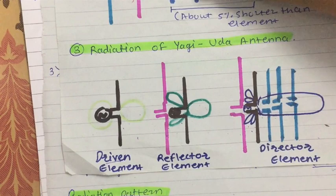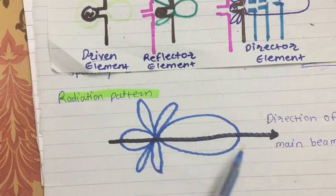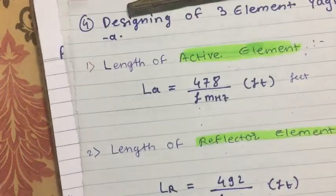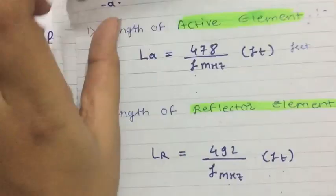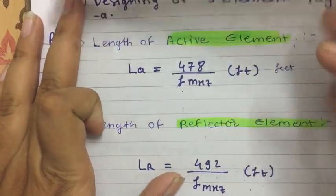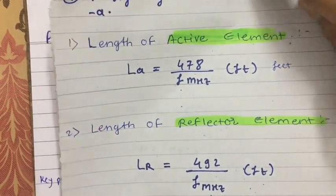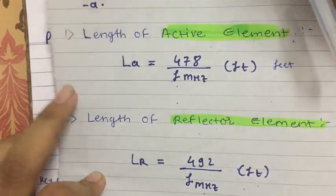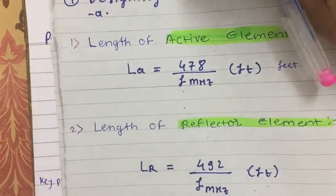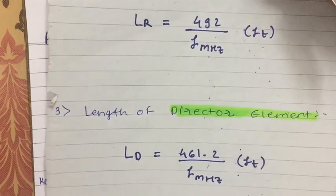Now we see the design of a three-element Yagi-Uda antenna. The length of the active element is calculated as 478 divided by frequency in MHz, in feet. The length of the reflector element is 492 divided by frequency in MHz, also in feet. The length of the director element is 461.2 divided by frequency in MHz, also in feet.